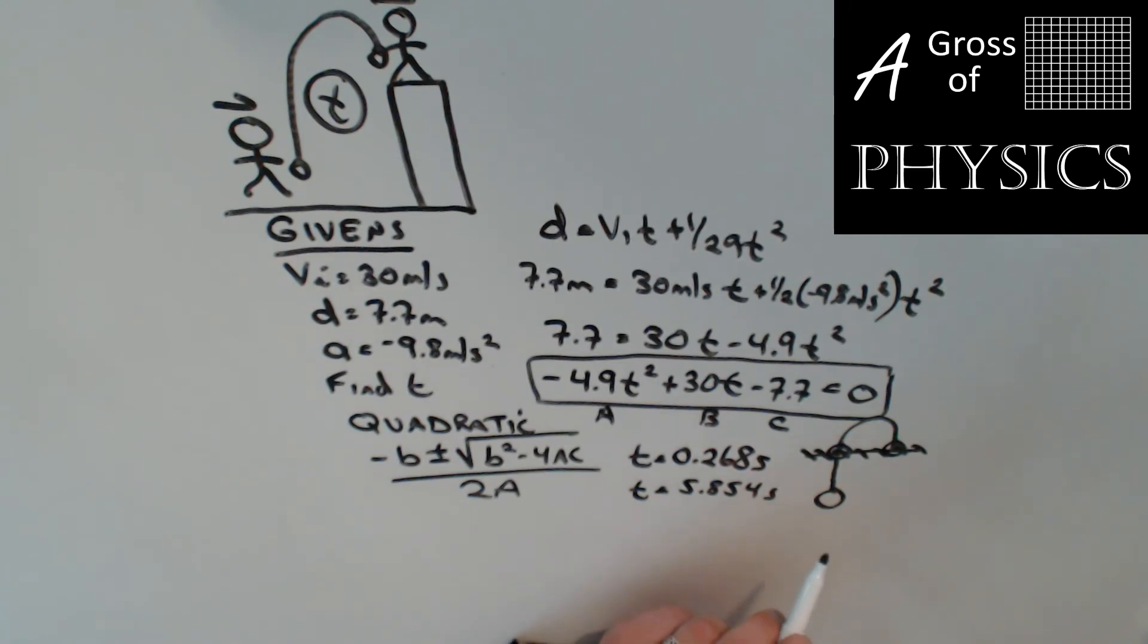Now the way the problem's worded, it says how long does the fan have to react for the ball to drop into their glove? So is the ball going on its way up or down when it reaches the fan? The fact of the matter is it's on its way down, so what we need to do is use the longer time.